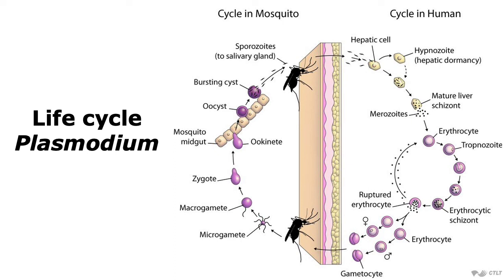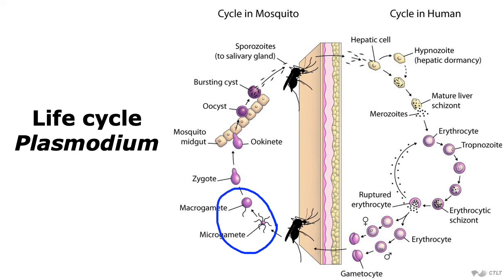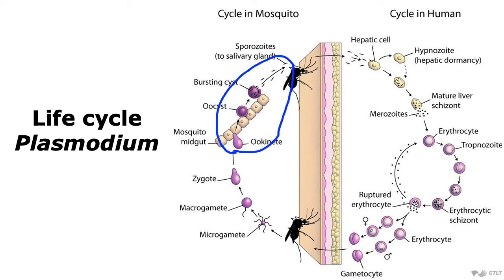Complete development of male and female gametes happens in the mosquito. Thus, when a mosquito bites a person infected with Plasmodium, the red blood cells that harbor the gametocytes of Plasmodium are able to enter the mosquito and complete development to form the male and female gametes. These male and female gametes then fuse in the mosquito to form a zygote. The zygote is then able to undergo multiple fission in the form of sporogony to give rise to sporozoites that are present in the salivary glands. These sporozoites can then go back into a human when that infected mosquito bites a human, and thus the life cycle continues.